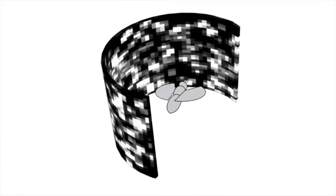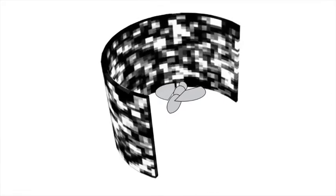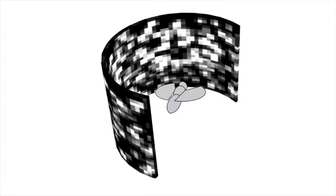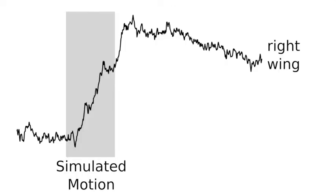For instance, here we are presenting motion to the right, which simulates the fly rotating to the left. Flies responded to this pattern of motion with slow, gradual changes in the wing stroke that would cause the flies to correct for the perceived rotation if it were not attached to the pin.